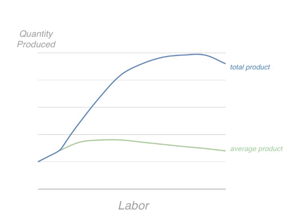So when we plot quantity produced on the y-axis and labor along the x-axis, the total product curve looks something like that. Average product like that and marginal product like that.